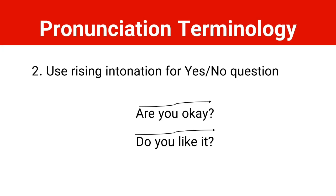Rule number two is for yes-no questions. We use rising intonation, meaning our voice goes up. For example: 'Are you okay?' 'Do you like it?' As you can feel and hear, my voice goes up when articulating such sentences.